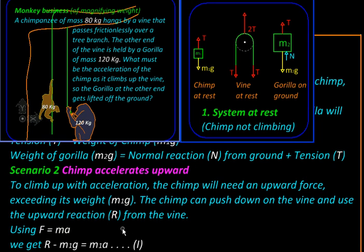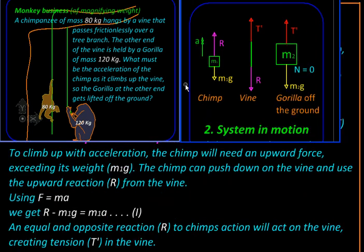Here is the free body diagram of the chimp: its weight m1g is acting downward, a reaction R is coming from the vine in the upward direction, and the two forces are not equal although they are opposite. Therefore there will be some net force in the upward direction causing an acceleration a of the chimp. It is like a car pushing backward on the road and gaining acceleration in the forward direction.